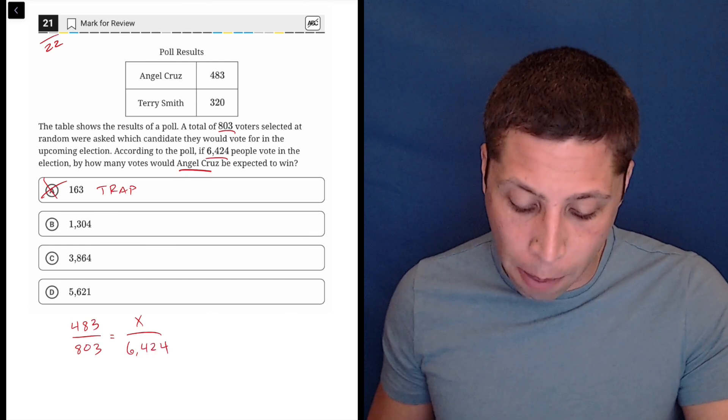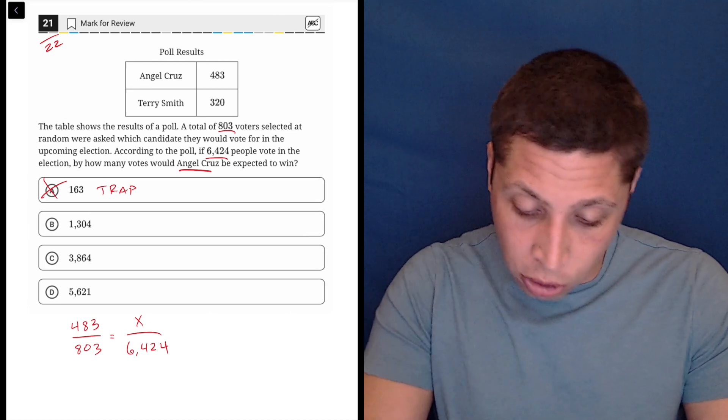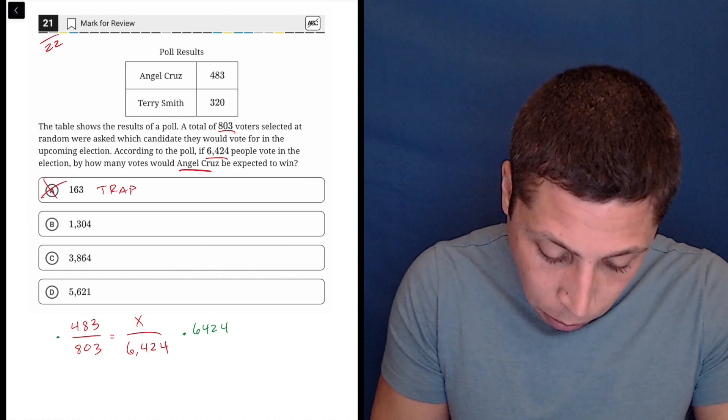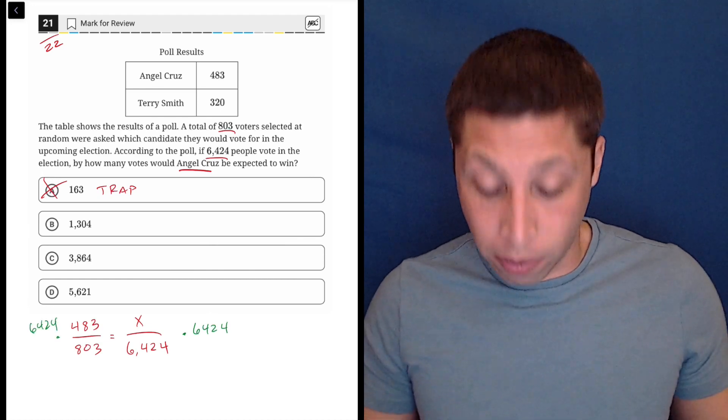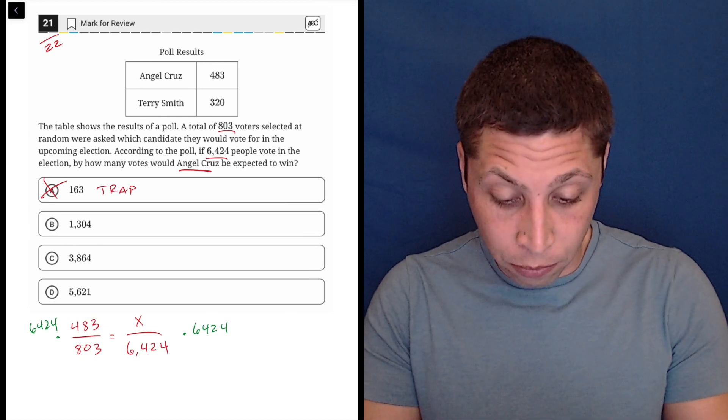So this is a simple ratio. There's no real complication here. We're just going to cross multiply and divide. So what I would do here is just multiply both sides by 6,424. And then here my calculator is going to take over. So I'm going to do 6,424 times 483.